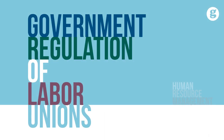Two of the earliest pieces of labor legislation were the Railway Labor Act of 1926 and the Norris-LaGuardia Act of 1935. Let's take a look at government regulation of labor unions.